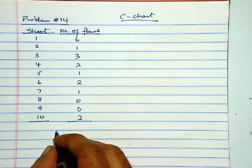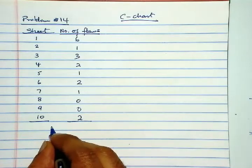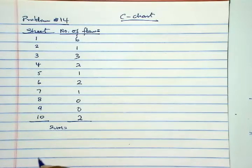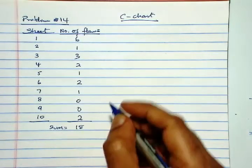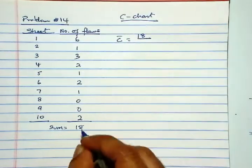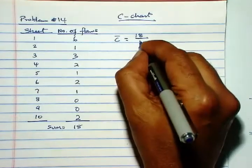We need to find c-bar, so for that we need the sum of these numbers, which is 18. So c-bar is 18 over ten sheets, so that is 1.8.